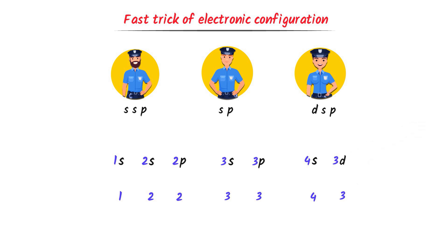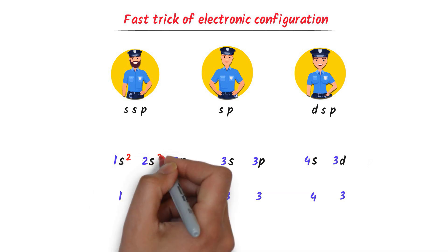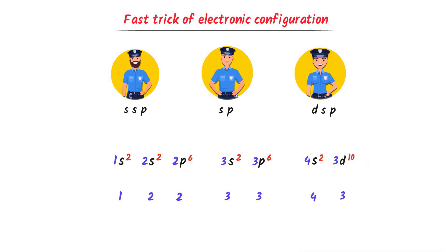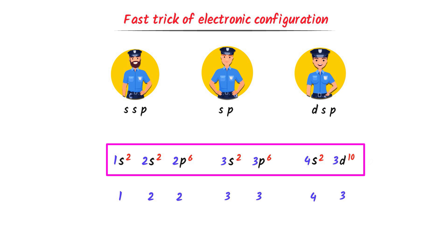S can accommodate 2 electrons, so I write 2 electrons for each S orbital. P can accommodate 6 electrons, so I write 6 electrons for each P orbital. D can accommodate 10 electrons, so I write 10 electrons. This is the complete code for writing electronic configuration.